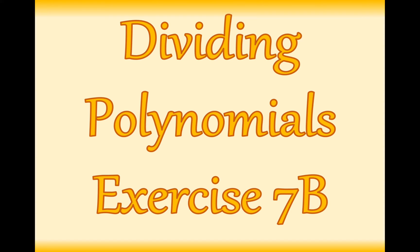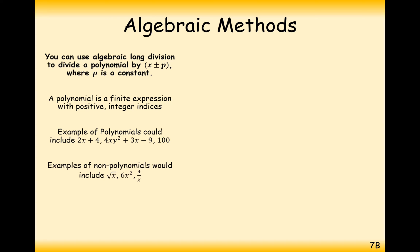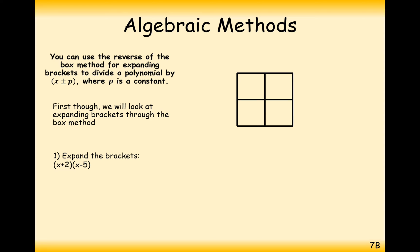Hello there and welcome to this series of videos going through the content of A-level maths. Here we're looking at dividing polynomials so we can answer questions from exercise 7b. We saw some algebraic division in the first video of this chapter 7 series, but here we're going to look at how we do this not just for quadratics but for cubics and quartics. Let's remind ourselves of the box method, because this is how we're going to be doing this algebraic division.